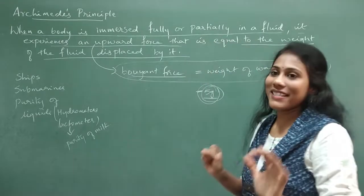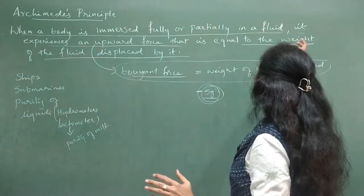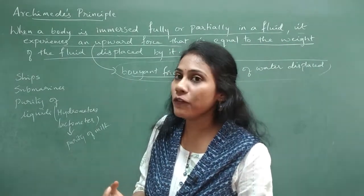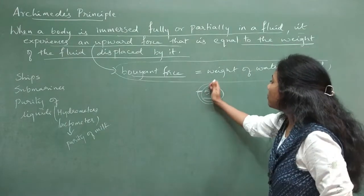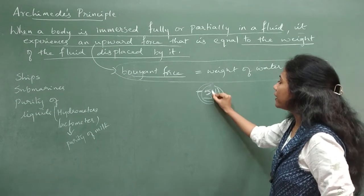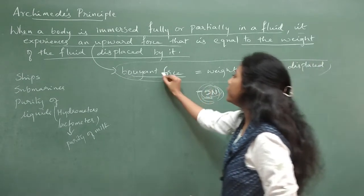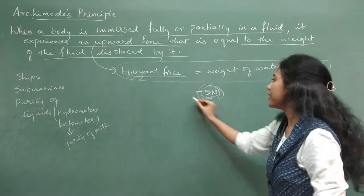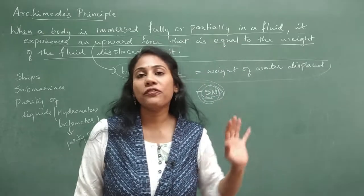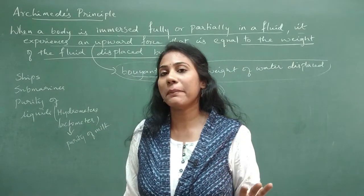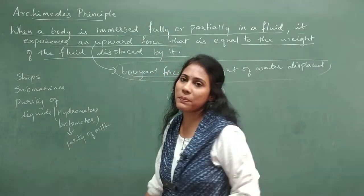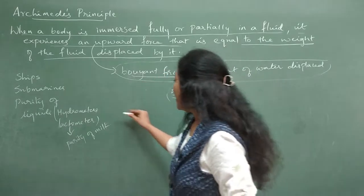Weight is the amount of substance under the influence of gravity, and its unit is Newton. So if the weight of displaced water is 5 Newton, then the buoyant force experienced by the object is also equal to 5 Newton. This is the meaning of Archimedes' principle — there are many versions, but this is the basic one.